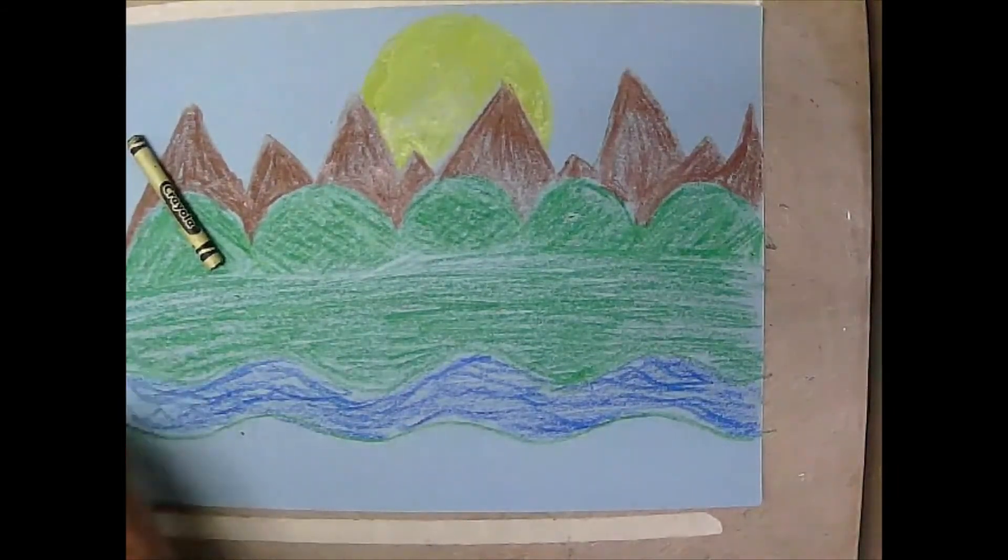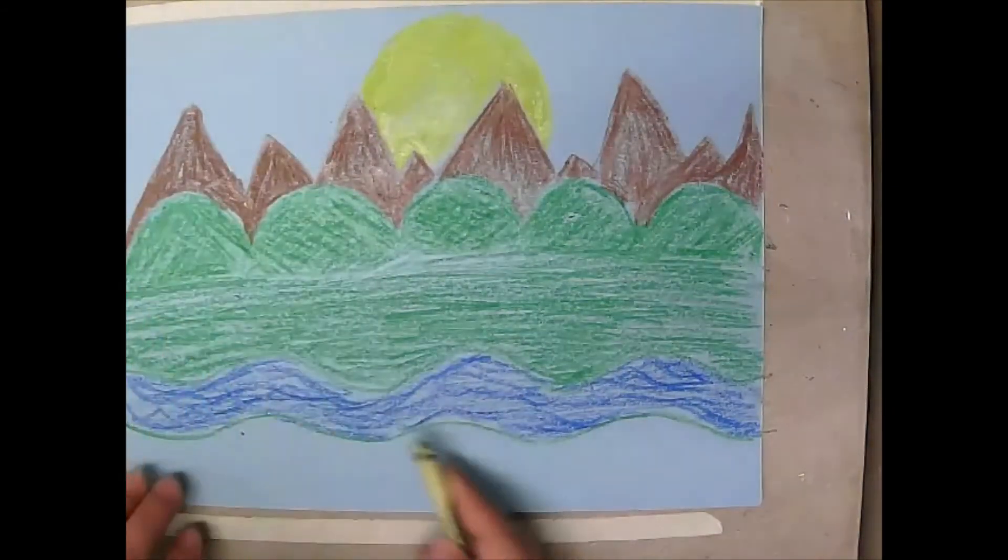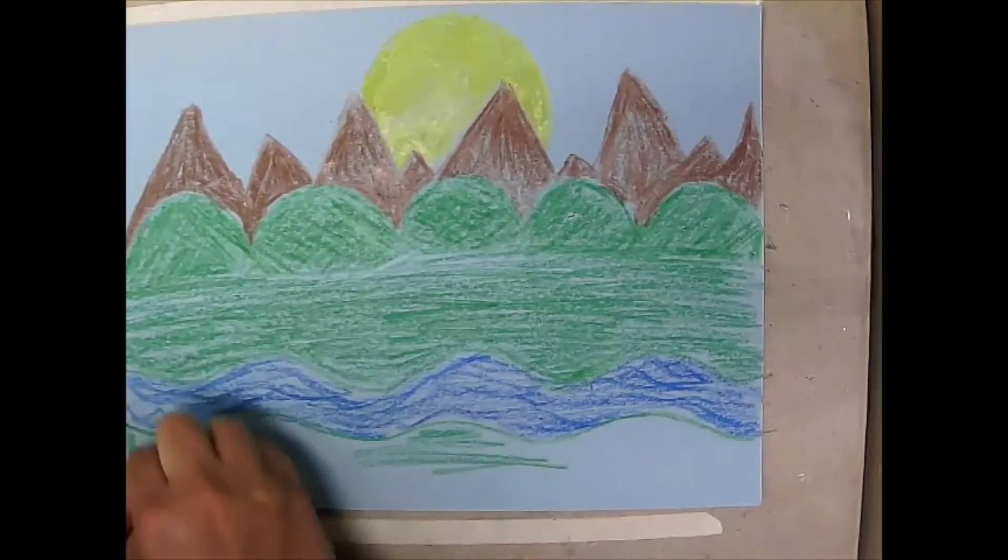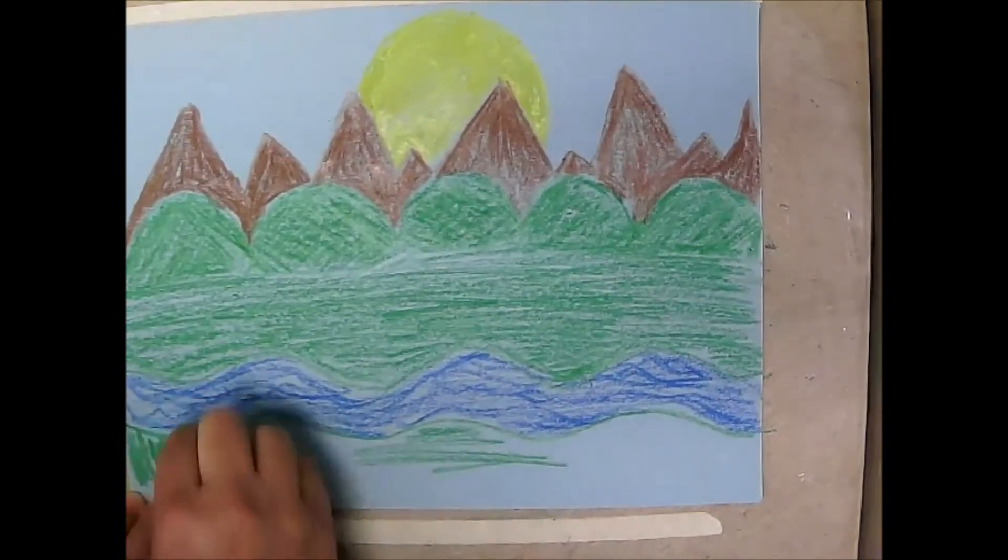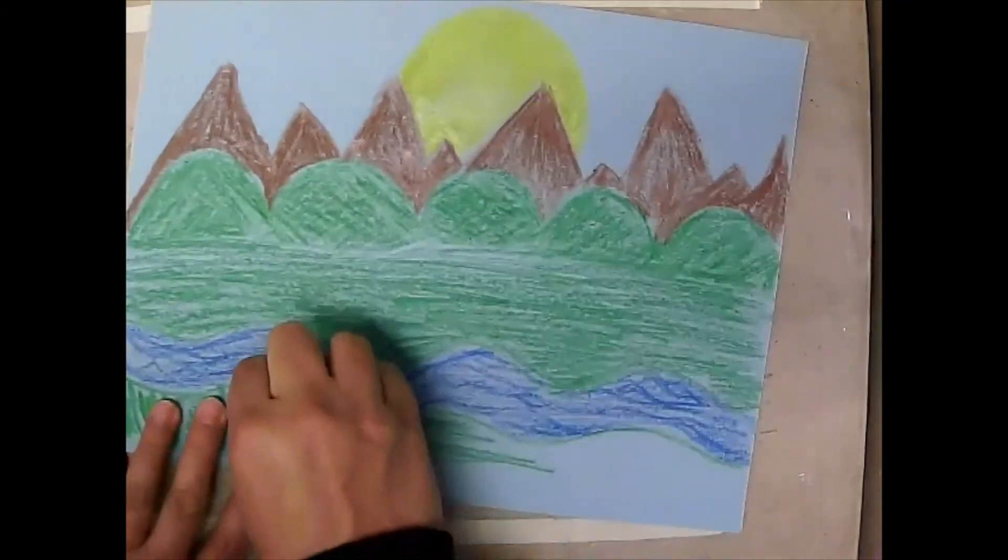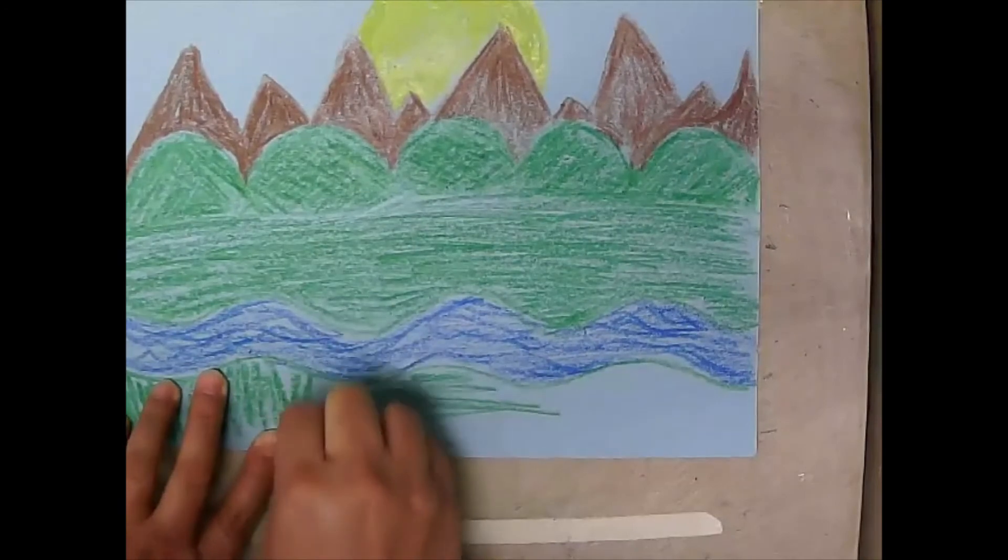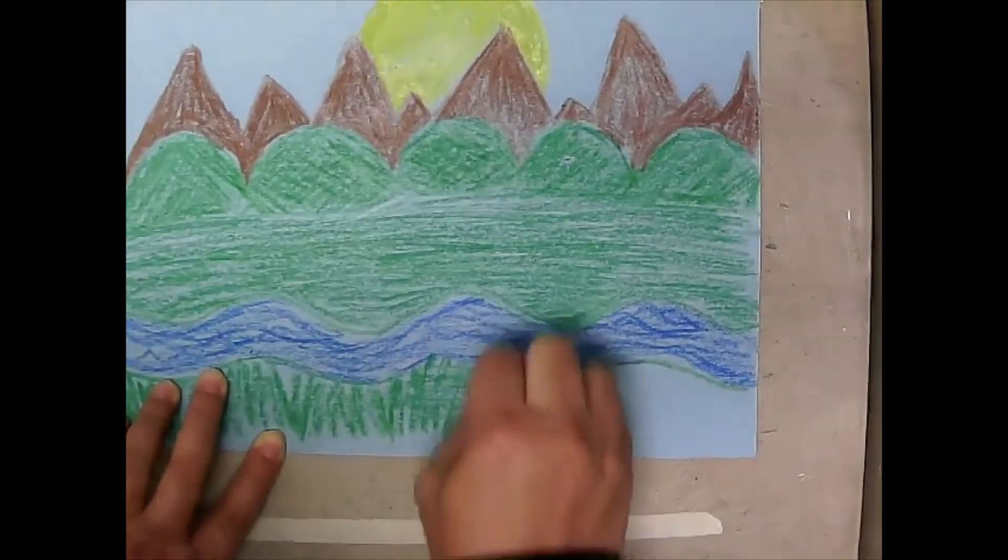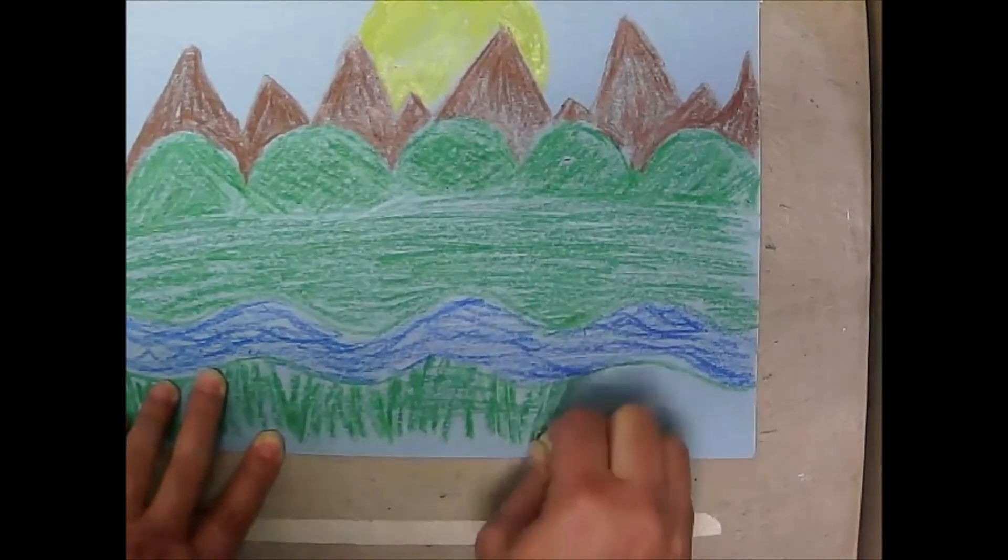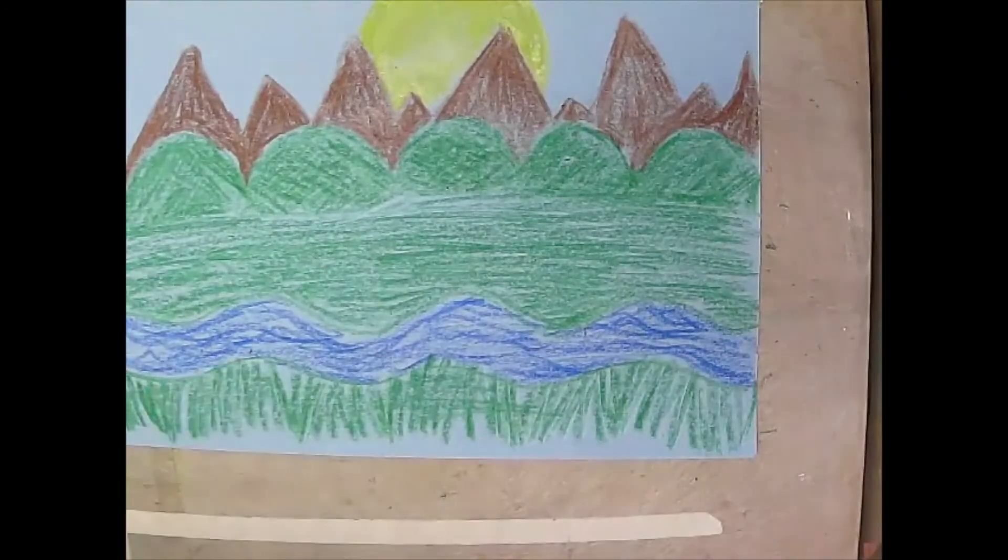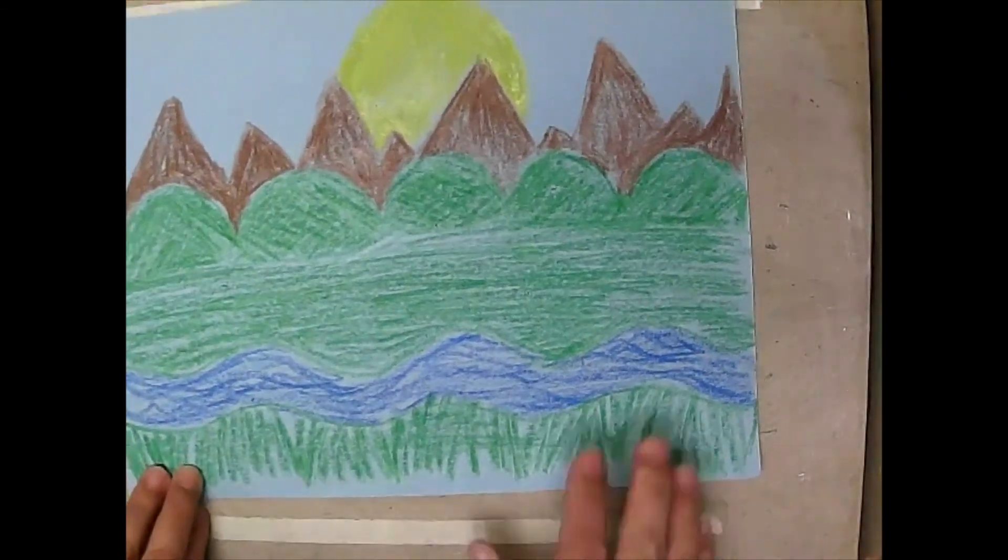And the bottom, once again, is green. If you want to go up with your strokes on this and make it look like some tall, tall grass instead of across, it would make that part look different. Cool, huh?